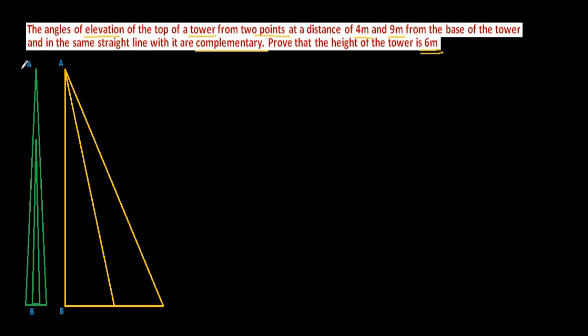Suppose this is a tower, and for this a vertical line has been created here, this AB with yellow line. Now, it is said there are two points. Let's suppose this point be C and this point be D. It is mentioned that these two points are in the same straight line and at a distance of 4 meter and 9 meter from the base of the tower. So this was the tower AB. This BC length will be 4 meter and BD length will be 9 meter.